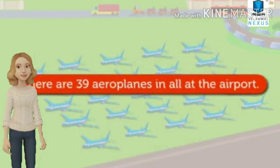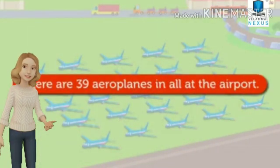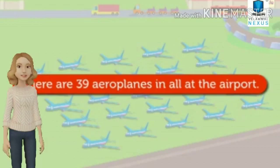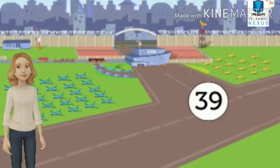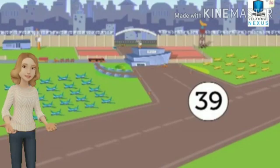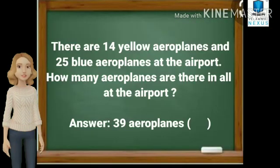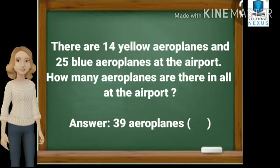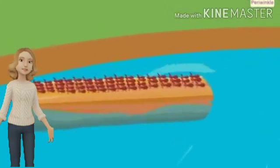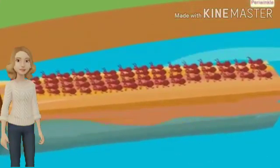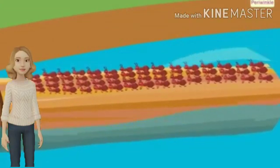So, there are 39 aeroplanes in all at the airport. Are we all clear with this question, children? Moving on to the question here, they have given us the answer 39 aeroplanes. So, as the given information is right, we need to put a tick.